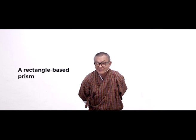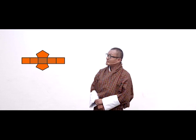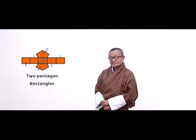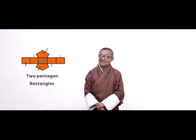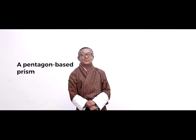Let's see another — this is a very simple net where all the faces are rectangles. I'm sure you know which prism we would get out of this: that is a rectangle base prism. Let's go further — here we have another net where you can see two pentagons connected by rectangles. By looking at the pentagon, you can see that this net is for a pentagon base prism.